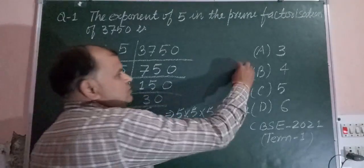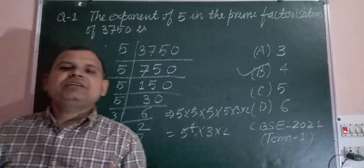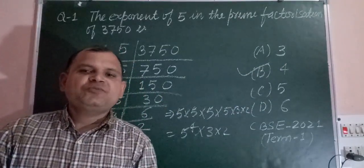So the exponent of 5 in the prime factorization of this number is 4. So the answer to this question is B. I hope you got it, thanks so much.